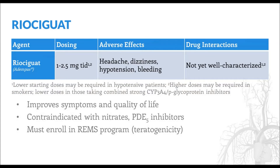Riociguat improves PAH symptoms and quality of life, and is approved for both PAH and CTEPH. It is dosed three times daily, and lower starting doses may be used in patients who become hypotensive, whereas higher doses may be required in active smokers. The adverse effect profile of riociguat is similar to the PDE5 inhibitors, and it too is contraindicated with nitrates. Other drug-drug interactions have not been well characterized. Lower doses may be required in patients receiving strong CYP3A4 and P-glycoprotein inhibitors due to theoretical interactions. Like the endothelin receptor antagonists, riociguat is teratogenic, requiring that patients be enrolled in a REMS program.